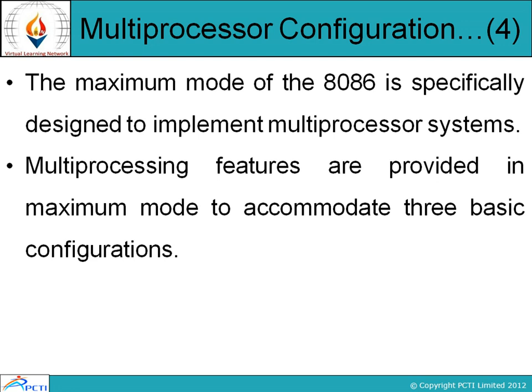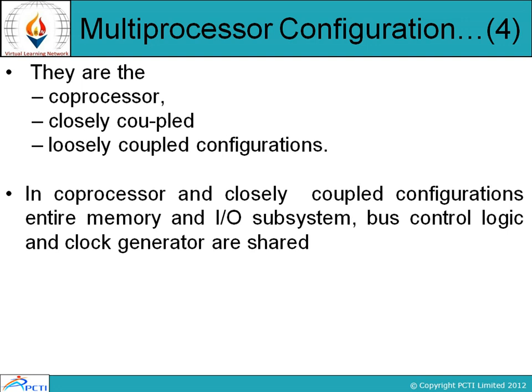Multiprocessor system features are provided in maximum mode to accommodate three basic configurations: co-processor, closely coupled, and loosely coupled configurations. These are the three different types of basic configurations.